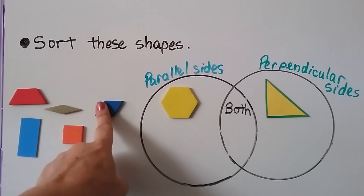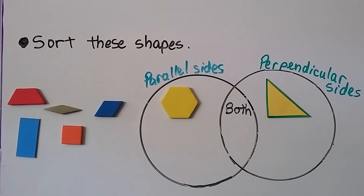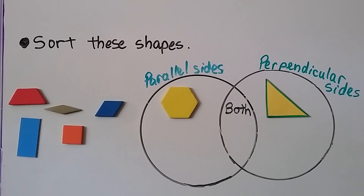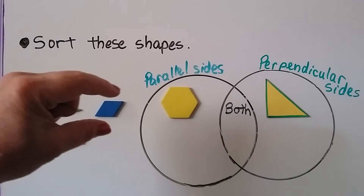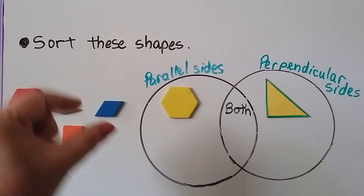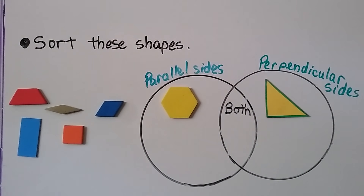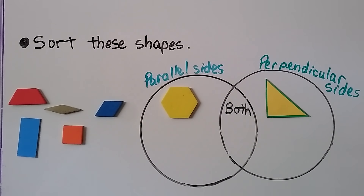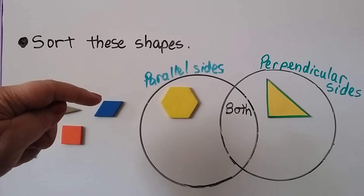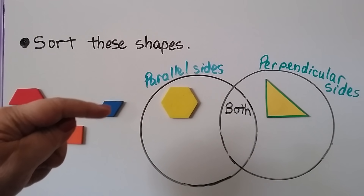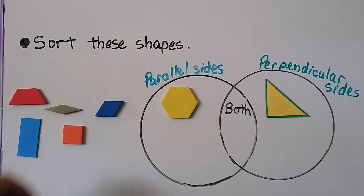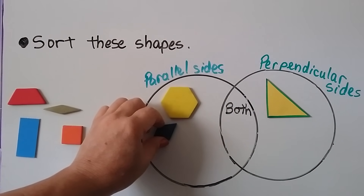What about this rhombus? Does it have parallel sides? I see parallel sides here and here, so it has parallel sides. But does it have any right angles for perpendicular sides? No, it doesn't. This angle is larger than a right angle, this one is smaller, this one is larger, that one is smaller. So it just has parallel sides.